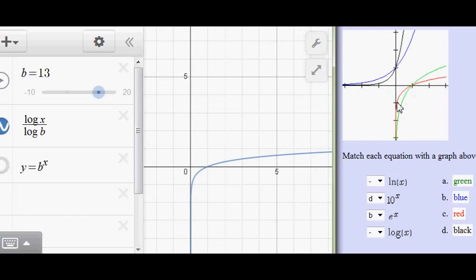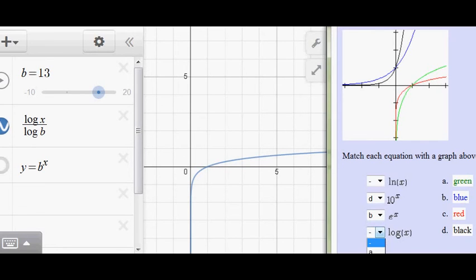So big value of b, smaller growth. So if you look over here, the big value of the base, which would be the base 10 down here, would be the slower growth, which is red. So base 10 I'm going to match with the red graph, which is c.